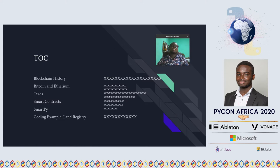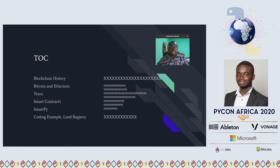Why land registry on blockchain? Because blockchain is essentially a public database — anyone can observe it with no restrictions. Unlike traditional applications where you can't access an organization's database directly and only see what they show you through their interface, with blockchain you can query the database itself.